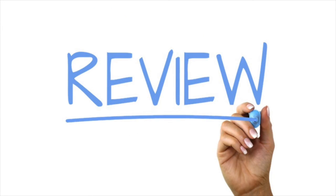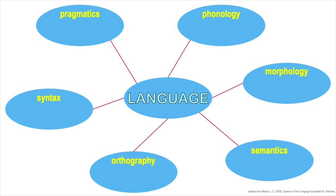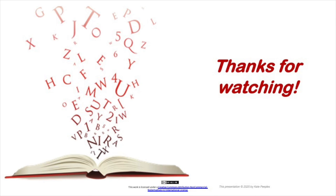Now let's review what we covered in this video. We focused on these two big ideas and went over definitions and examples for the six systems of language — each of which will come up again and again. Here again is that graphic organizer for this topic. You can now see how any weaknesses or gaps in any of those skill areas can have a significant effect on the development of later literacy skills. They're also key to the development of expressive and receptive language, which we also defined in this video. And that's all for this topic — thanks for watching.